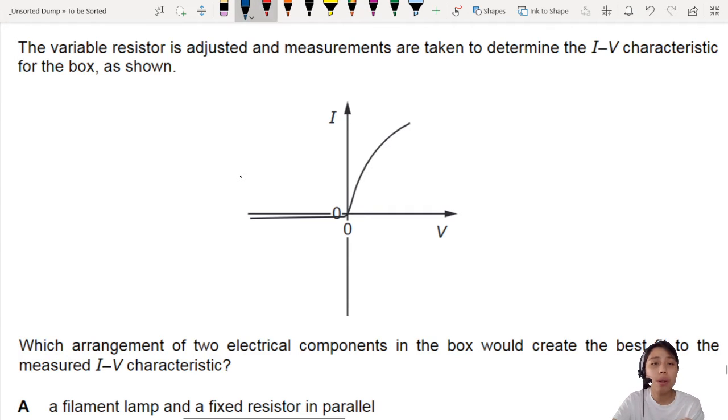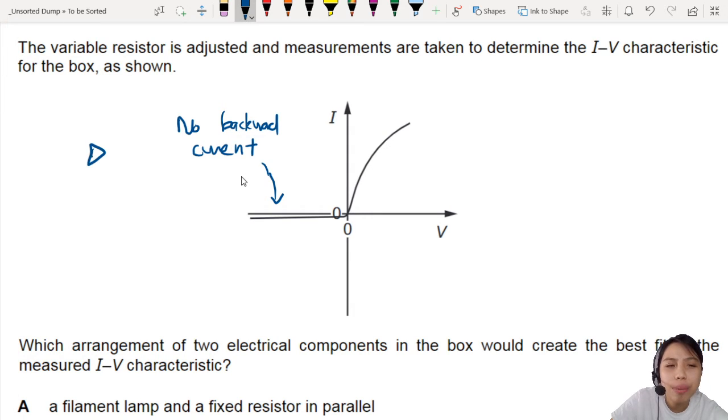We have not seen this IV curve before in our lessons, but you can deduce there's actually two different components in the box. First things first, look at this part. There is no backward current. Now, what kind of component prevents a backward flow of current? The diode, if you thought about that.